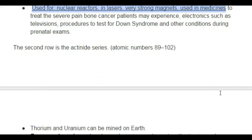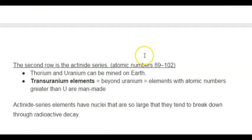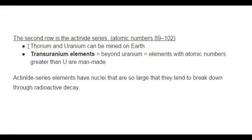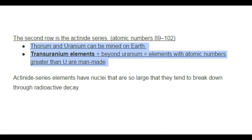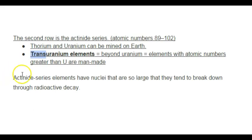The second row is the actinide series, atomic numbers 89 through 102. Thorium and uranium can be mined on Earth. Then we have what are called transuranium elements. Breaking this word apart: uranium — as in uranium bombs or nuclear power plants — and the word part trans, which means beyond, like the transcontinental railroad going all the way across the United States. Transuranium elements are elements with atomic numbers greater than uranium, and they are man-made.